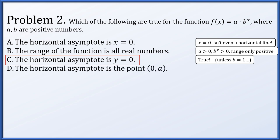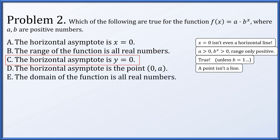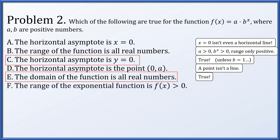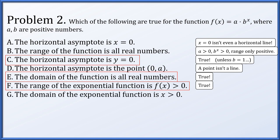Is the horizontal asymptote the point (0, a)? A point isn't a line — this is false. Is the domain all real numbers? This is true — with a positive base, b^x has domain all real numbers. Is the range all positive numbers? This is true, again assuming b is not equal to 1. Is the domain only positive x's? We've already established the domain of exponential functions with positive bases is all reals, so that is false.